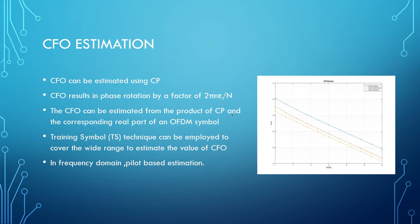Moving on, the CFO estimation. We need to estimate how much offset we are getting in the receiver side so that we can compensate for that and get a proper transmission. The CFO can be estimated using various techniques. The things that I've investigated in the project is the first being the cyclic prefix method. The cyclic prefix causes a phase rotation by a factor of 2 pi n epsilon by n. CFO can be estimated as a product of the cyclic prefix and the corresponding real part of the OFDM symbol.